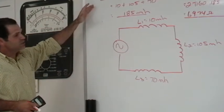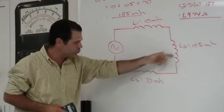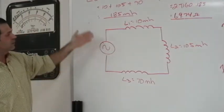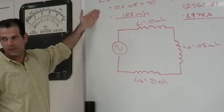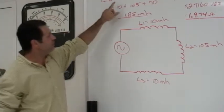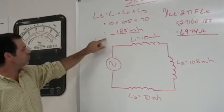We're going to cover the first set of formulas for series circuits that deal with inductors. Very similar to our series circuits in DC. Just add them up, L1 plus L2 plus L3 and you get your total inductance.